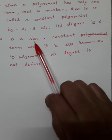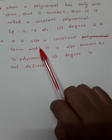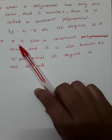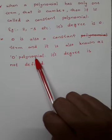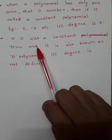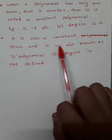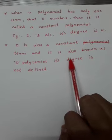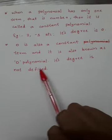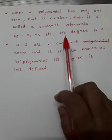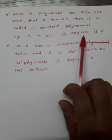The constant polynomial 0 is also known as the zero polynomial. Its degree is not defined — unlike other constant polynomials whose degree is 0, the degree of the zero polynomial is not defined.